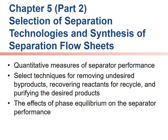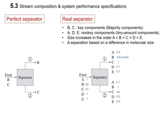Part 2 of Chapter 5 about Separation. Here is a perfect separator. In this case, we have a mixture of B and C as a feed stream. This feed stream is introduced to this perfect separator and then we have two output streams. In the first stream, we have only the B component, and in the second stream, we have only the C component.